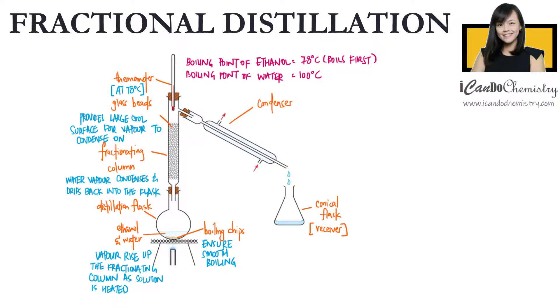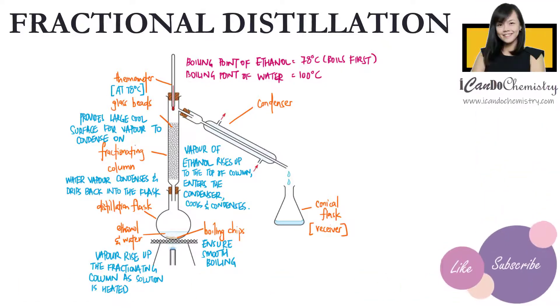Only vapour of ethanol will be able to continue to rise up to the top of the fractionating column, enters the condenser, cools and condenses, and eventually be collected as distillate in the receiver.